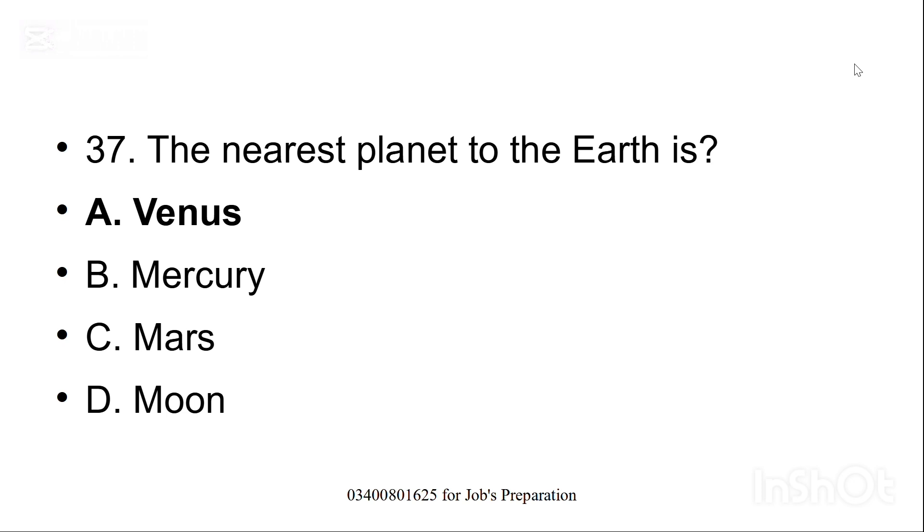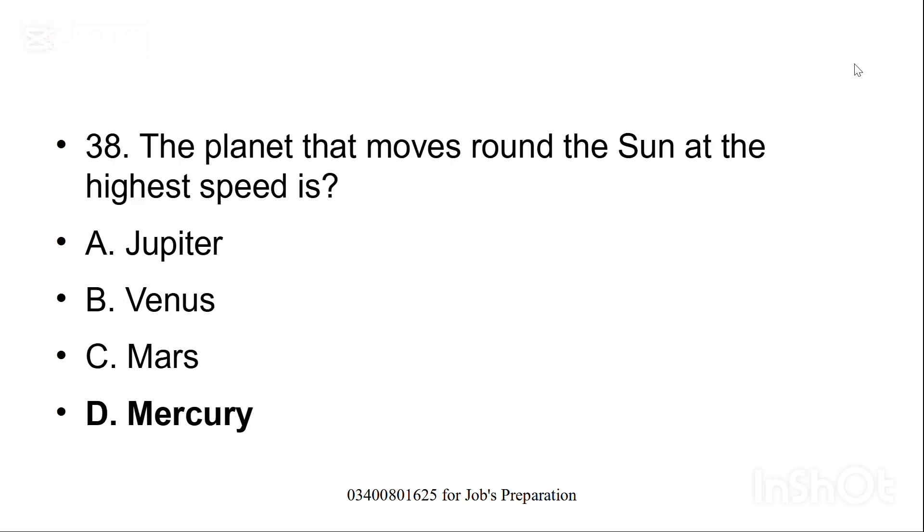The nearest planet to the earth is, earth ke bilkul saamne wala kaunsa planet hai. Option A, Venus is the correct option. The planet that moves around the sun at the highest speed is, option D, Mercury because it is very small. It is the smallest planet and it is fastest as well.